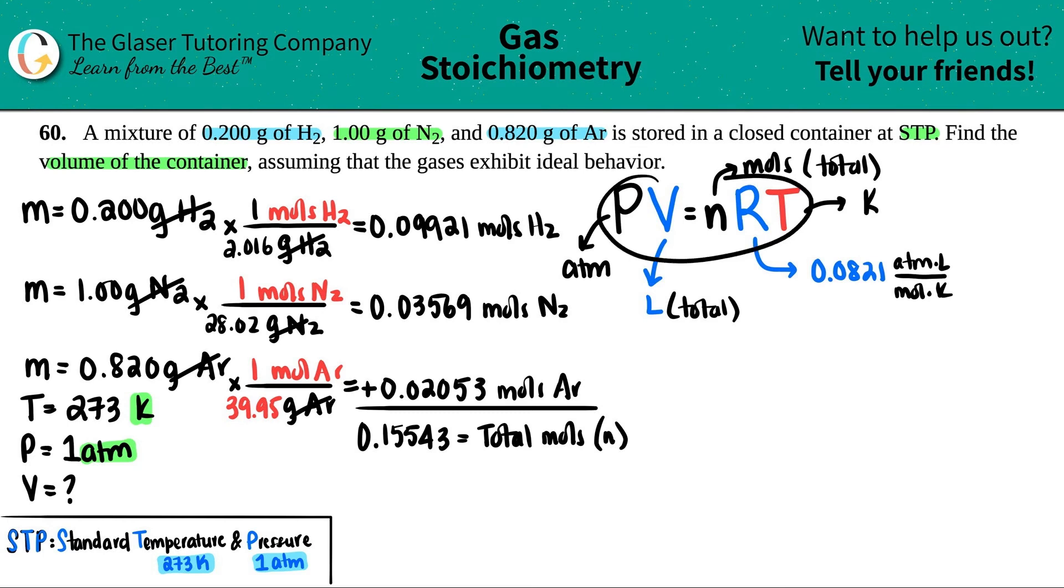So we have now everything we need to solve. Let's go from left to right, just plug it in. P was 1 atm, so 1 times the volume (that's what we're solving for, so I'll just label it as x) equals the n value, which is now the total number of moles.